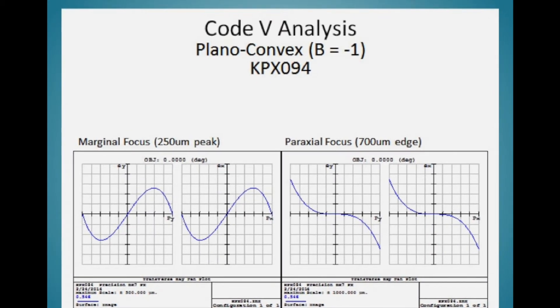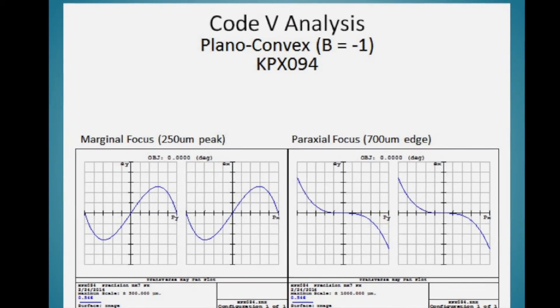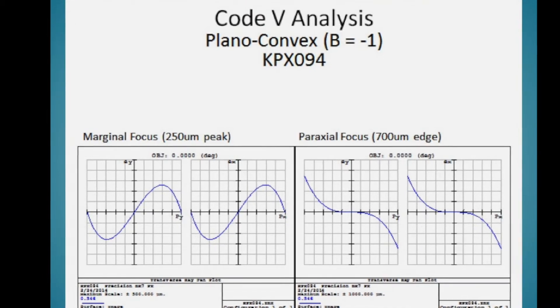Using Code V, we found that for this setup, with a shape factor of b equals minus one, had the most error, most spherical aberration.